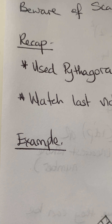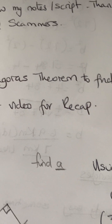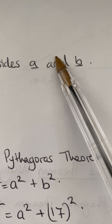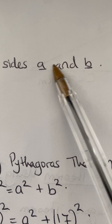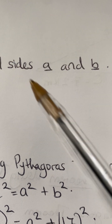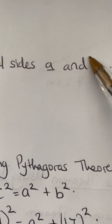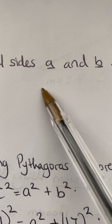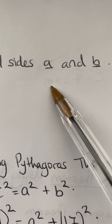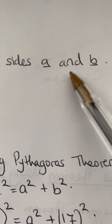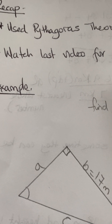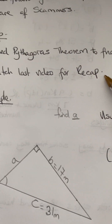Let's recap. We use Pythagoras' theorem to find sides A and B. I showed you earlier how to find the hypotenuse using Pythagoras' theorem — that is C. Yesterday we concentrated on using A and B. Please watch the last video for a recap.